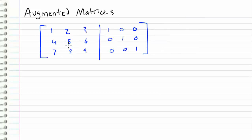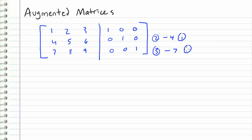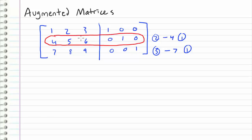So if we had this example right here, we have this matrix on the left side, and on the right side of our augmentation bar we have the identity matrix. Essentially we can think about this as a giant matrix composed of two 3×3 matrices. When we do our row operations — like take the second row and subtract four times the first row, or take the third row and subtract seven times the first row — we apply this operation across the whole entire row, including both the left and right side of this augmentation bar.